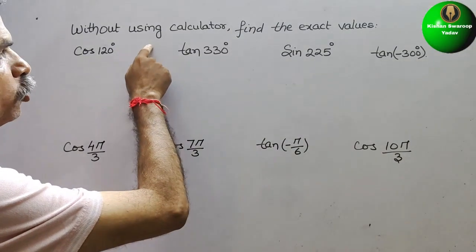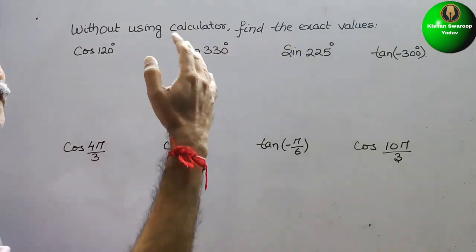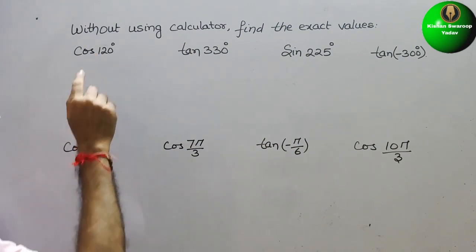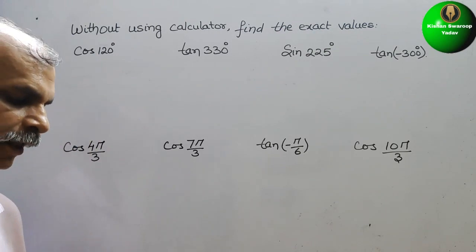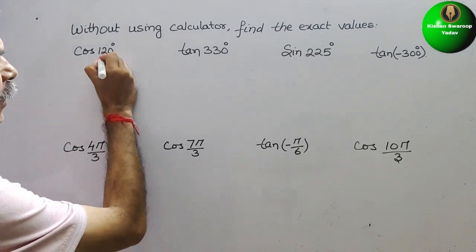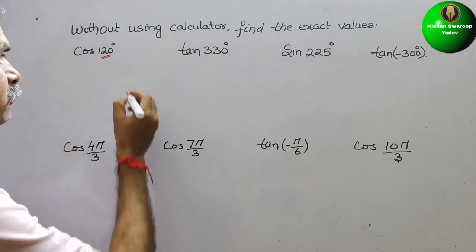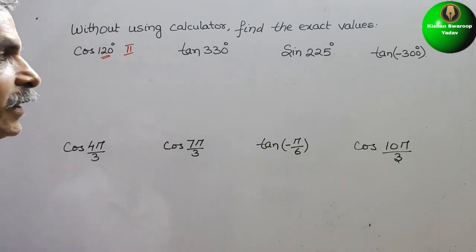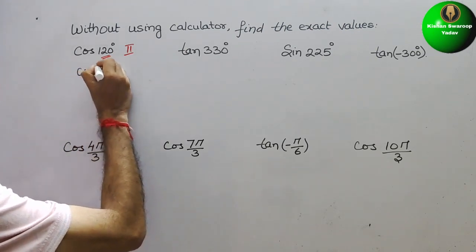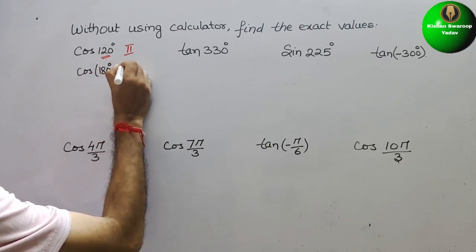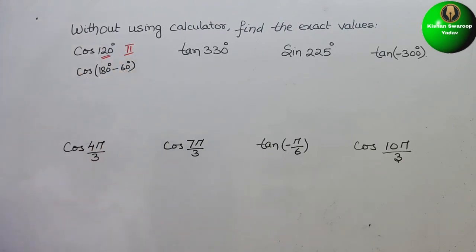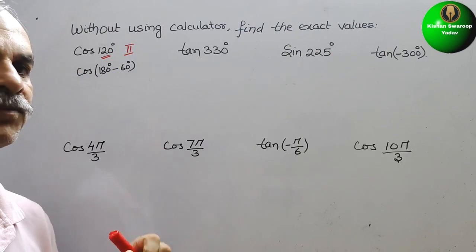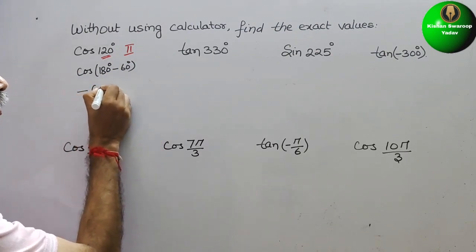The question is to find exact values without using a calculator. They have given cos 120 degrees. Cos 120 degrees — 120 degrees lies in the second quadrant. We will rewrite it as cos(180° - 60°). This is cos 120°. We know that in the second quadrant, cos is negative. Therefore, it will be minus cos 60°.